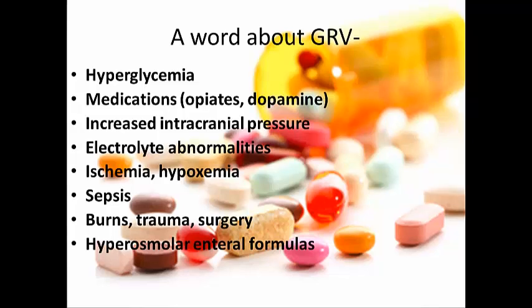There are other things that can cause elevated GRV besides tube feeding intolerance, including hyperglycemia, medications that reduce stomach activity, increased intracranial pressure, electrolyte abnormalities, ischemia, sepsis, burns, and even the type of formula. Additionally, you'll often see an elevated GRV on the very first enteral feeding, but this will decrease over time. Checking the GRV is also problematic — it can be influenced by the position of the tube tip in the stomach, how the patient is positioned, and the patency or size of the tube. Fortunately, more and more facilities are relying less on GRV to make decisions about holding tube feedings.